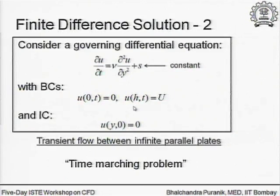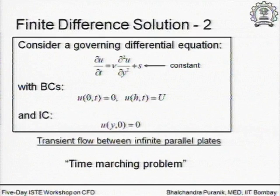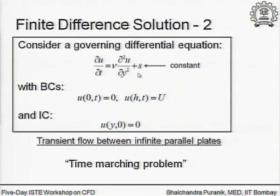Let us look at what we are talking about here. This is from the point of view of introducing one problem where the solution will be worked out using finite differences. I am not going to talk about general finite difference philosophy in depth. With respect to this specific problem - the transient flow between infinite parallel plates - the governing equation is the diffusion equation with source term, where the source equals minus one over rho dp/dx, which is a constant, with the given boundary conditions.